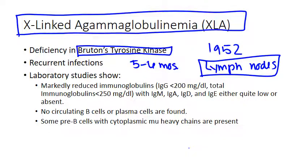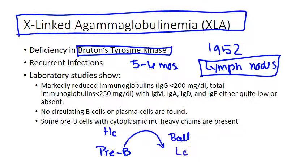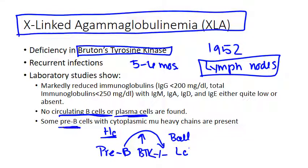In XLA, you make your heavy chain in the pre-B cell stage. In order to transition from pre-B cell to B-cell — where you've made your light chain — you need to turn on a tyrosine kinase now known as BTK, Bruton's tyrosine kinase. If you are deficient in BTK, you can never move from having a heavy chain to having a heavy chain and a light chain. So you never make that leap. You're not able to identify any circulating mature B-cells — they stall out — and you won't find any plasma cells. You'll find some pre-B cells that are likely going to have a cytoplasmic mu heavy chain because they can't progress to making their light chain.